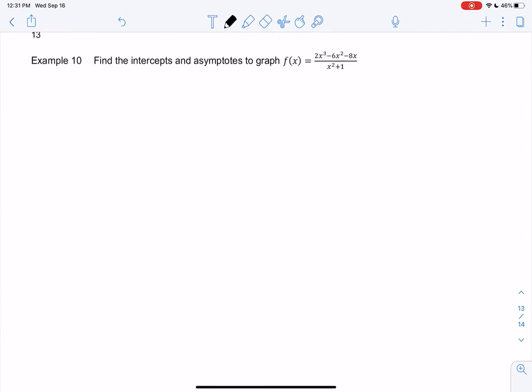So this one's going to get a little messy. There's a lot going on. So 2x³ minus 6x² minus 8x. So that's my numerator. And then all over x² plus 1. So let's find intercepts and asymptotes and then whatever else we may need. So intercepts. What happens when I plug in 0? I think I just get 0 because the top would be 0. So my y-intercept is (0,0).